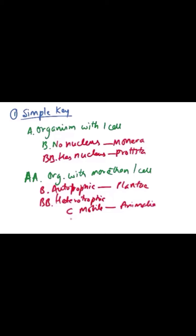Now let's understand how to use the simple key. You have an unknown organism. In a simple key, we make two characters: first, organism with one cell, and second, organism with more than one cell. If the organism has one cell and no nucleus, it comes under Monera.